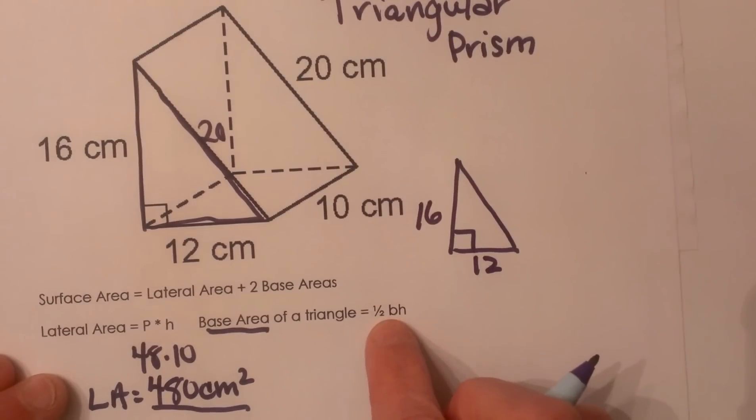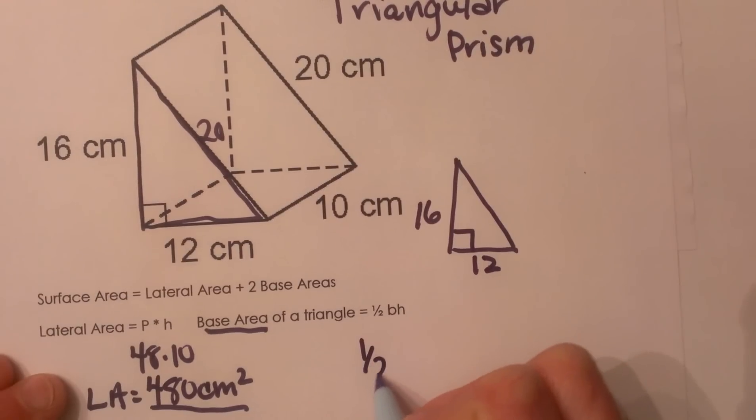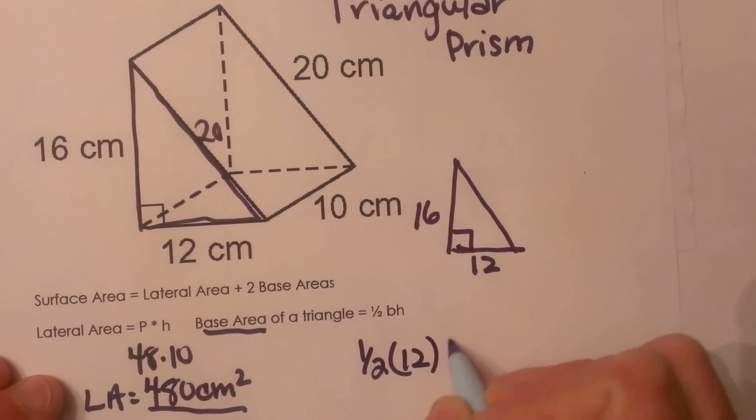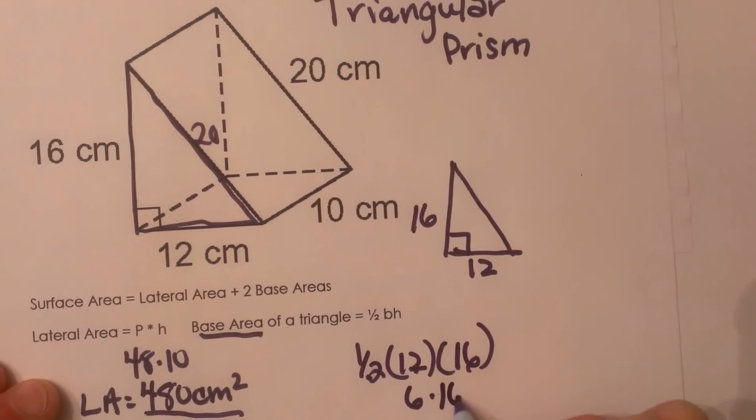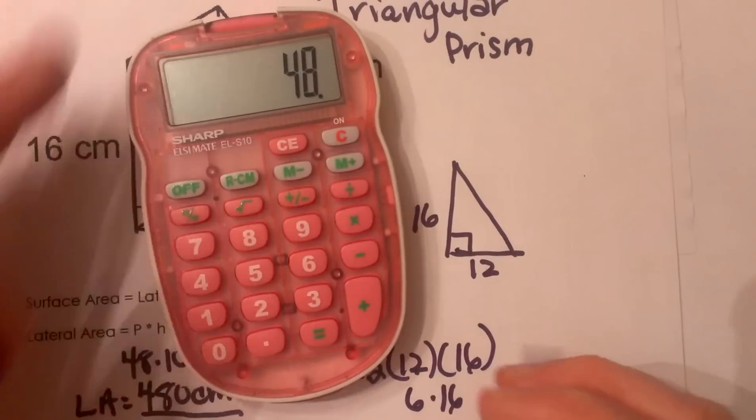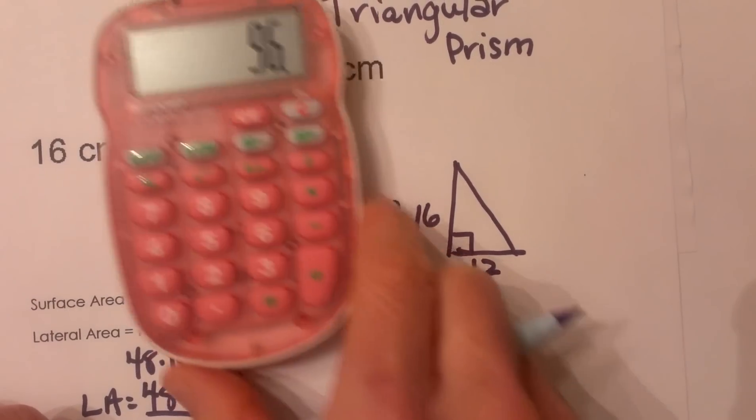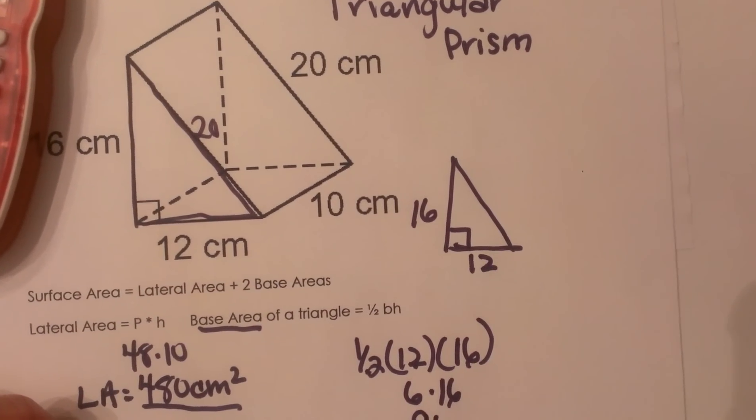We're just going to do one-half base times height. So I'm going to take one-half of the base—well, the base is 12 and the height is 16. So half of 12 is 6, and 6 times 16, let's grab a calculator, 6 times 16, that's going to give me 96.